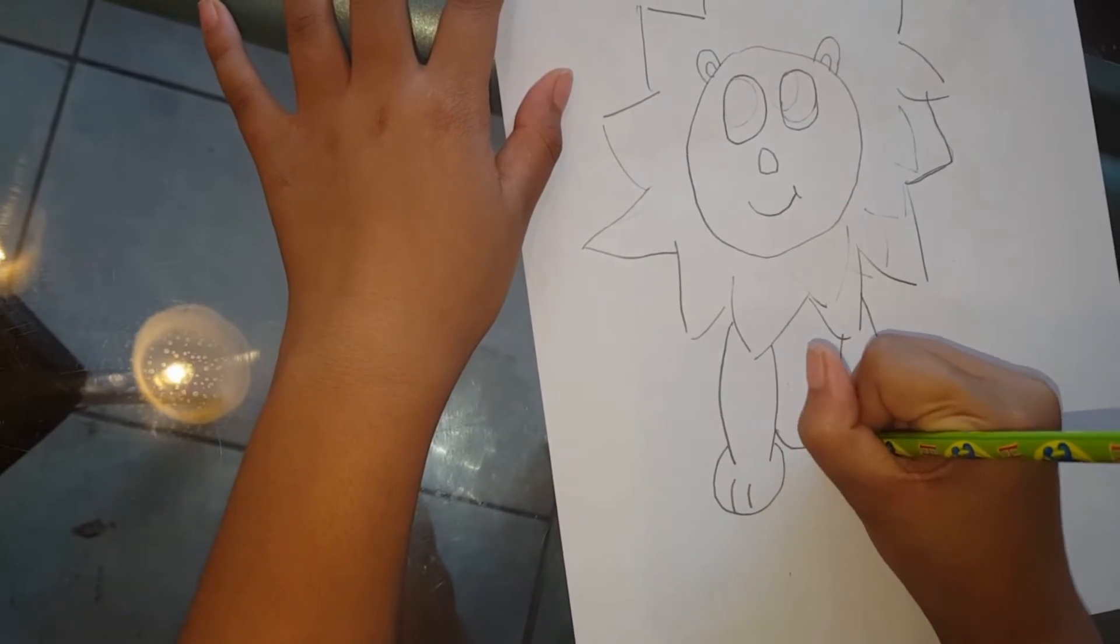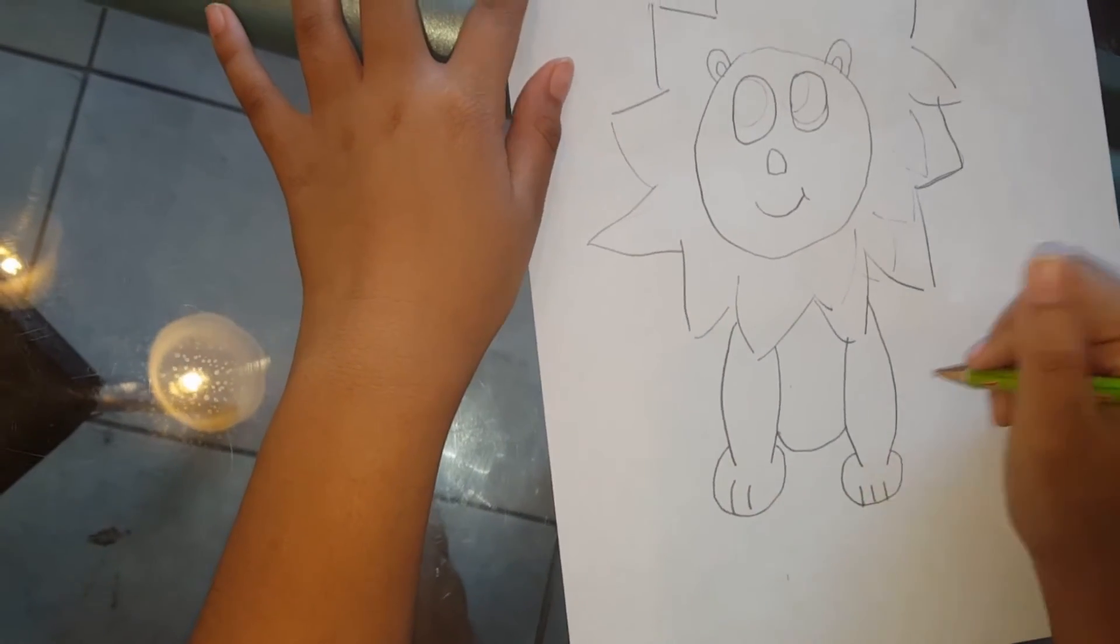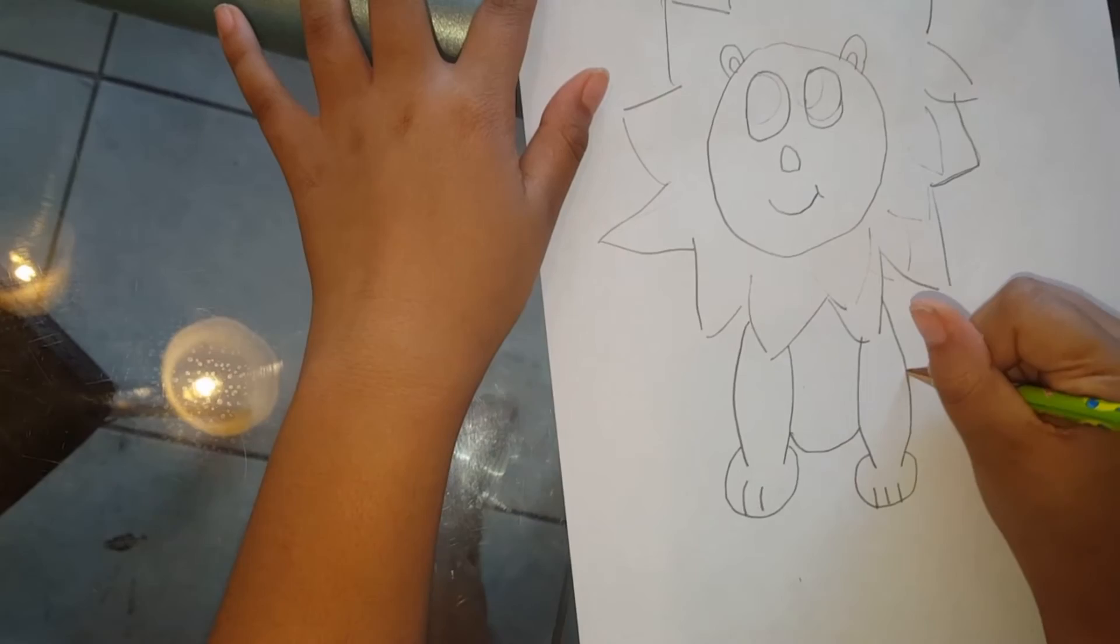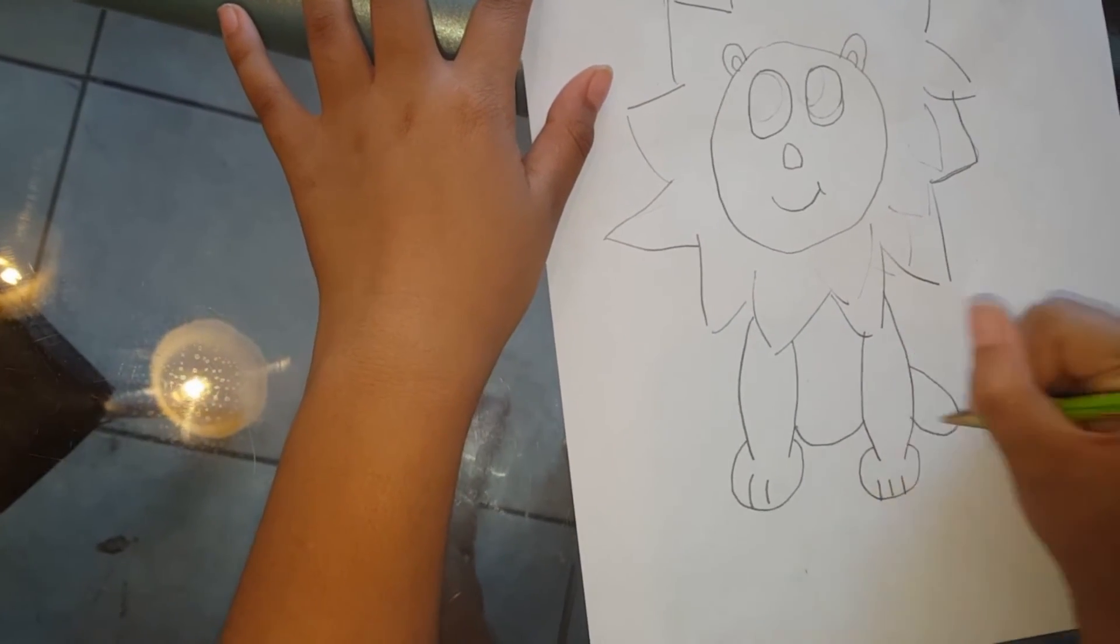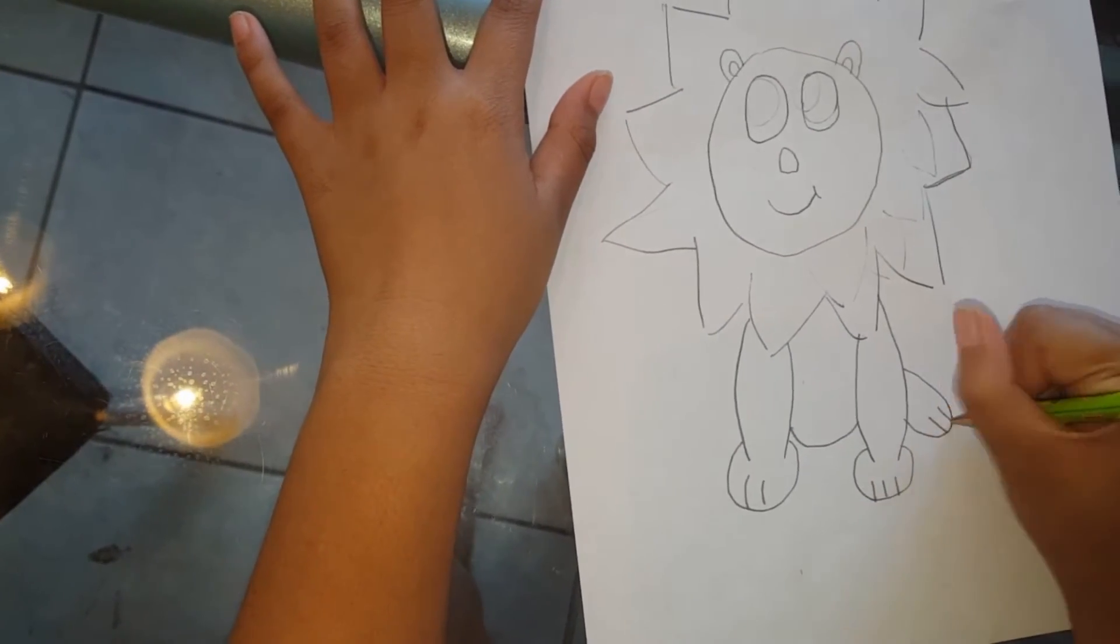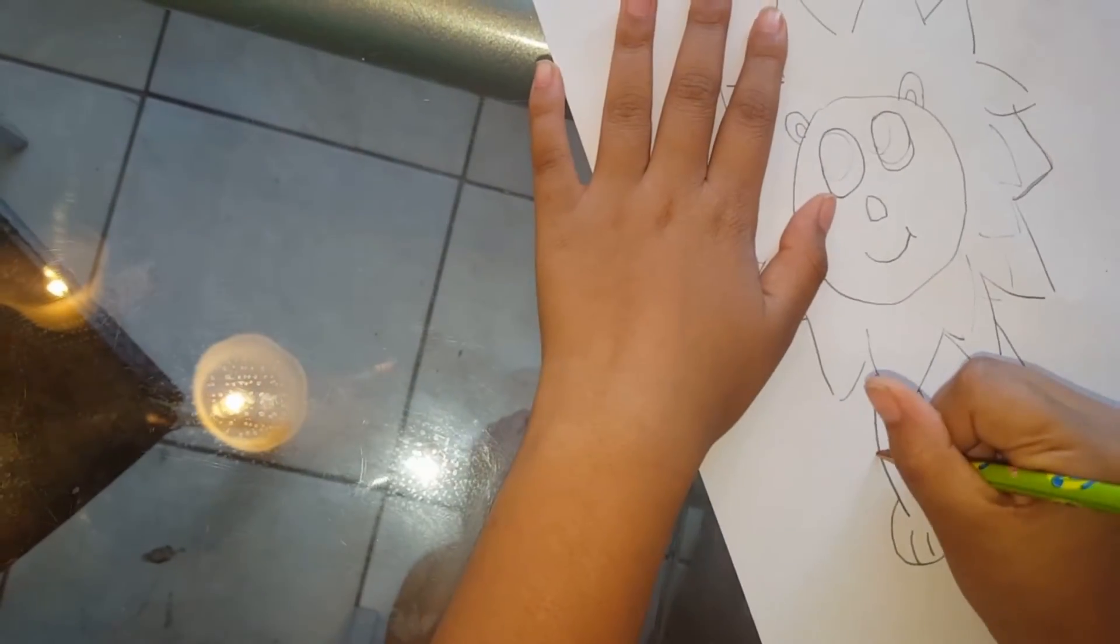Now we're just going to draw a line in the middle. And then we're going to make it look like it's sitting down, so we're going to add some legs at the side. And then draw two lines. Do that with both of the sides.